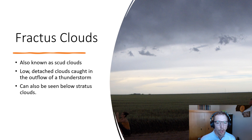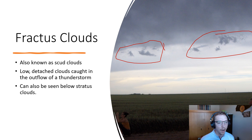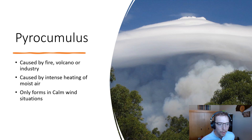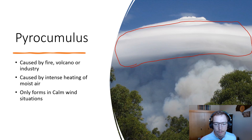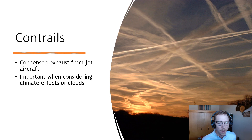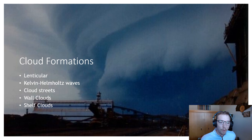Moving into other cloud types: fractus clouds, also known as scud clouds, are low detached clouds caught in the outflow of a thunderstorm, also seen below stratus clouds. Pyrocumulus clouds are caused by fire, volcanoes, or industry — intense heating of moist air — and only form in calm wind situations, creating an almost pancaking layer of cloud formation, as seen above a wildfire. Contrails are condensed exhaust from jet aircraft, important when considering climate effects on clouds — we'll talk about some of the reflective capacity effects, including a video called Dimming the Sun, related to albedo.